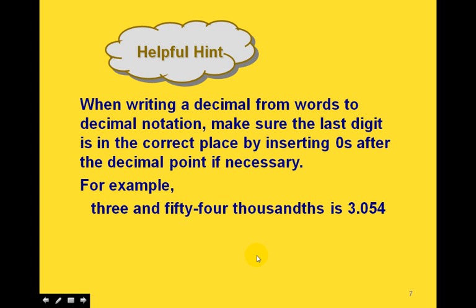Another example: if we had 354 thousandths, since the last digit has to be in the thousandths place — that's the 4 — then we'd have to write 354 so that it ends in the thousandths place. That means we'd have to put a zero in front of the 3 as a placeholder, giving us 0.354.